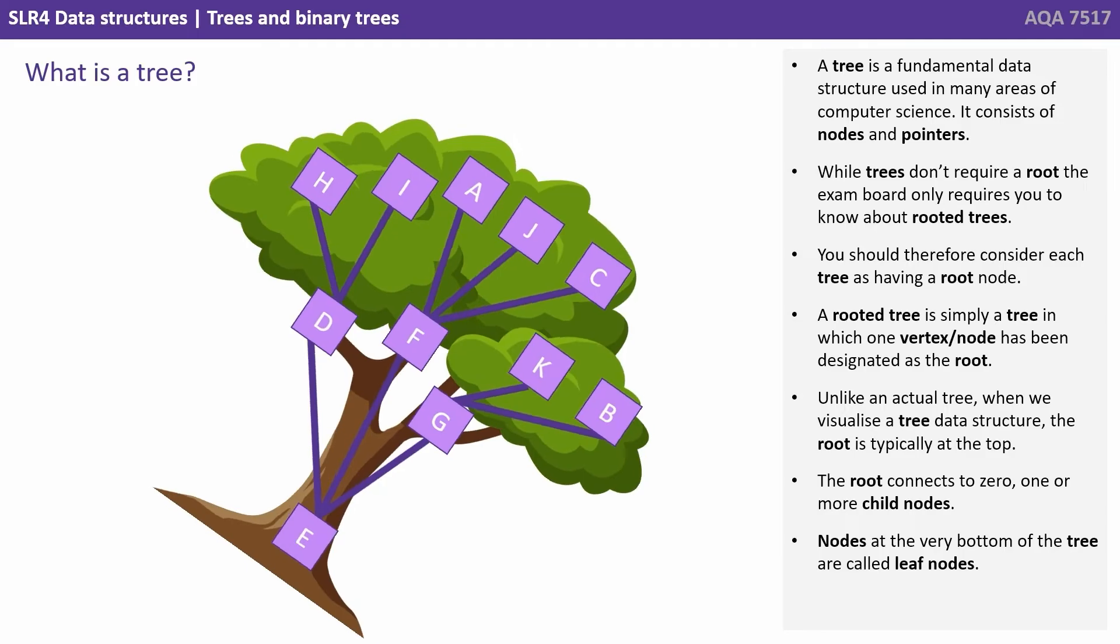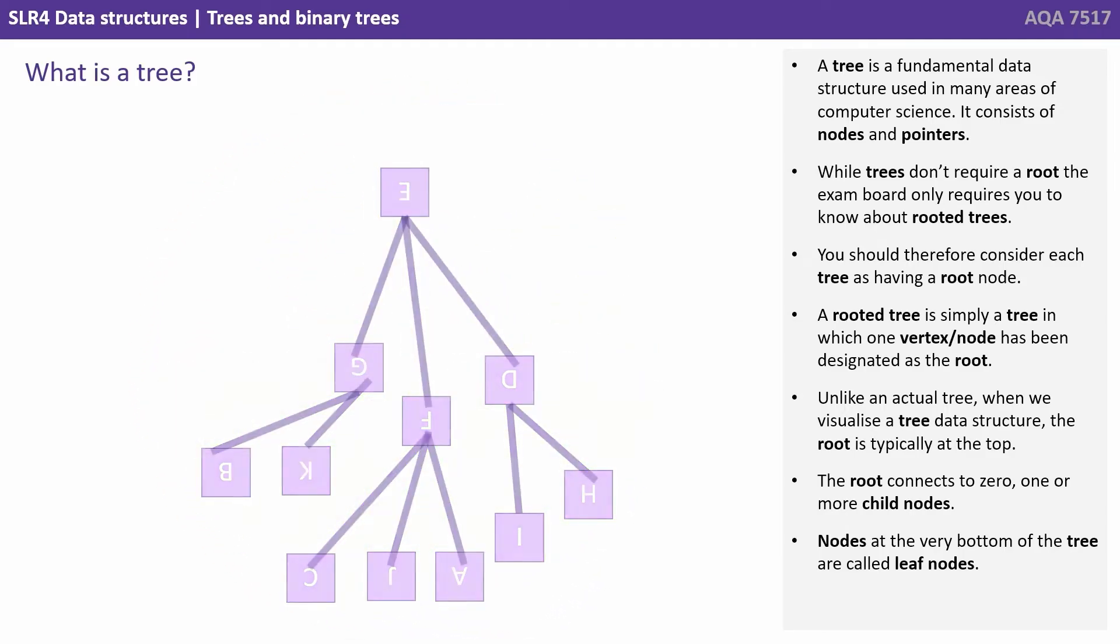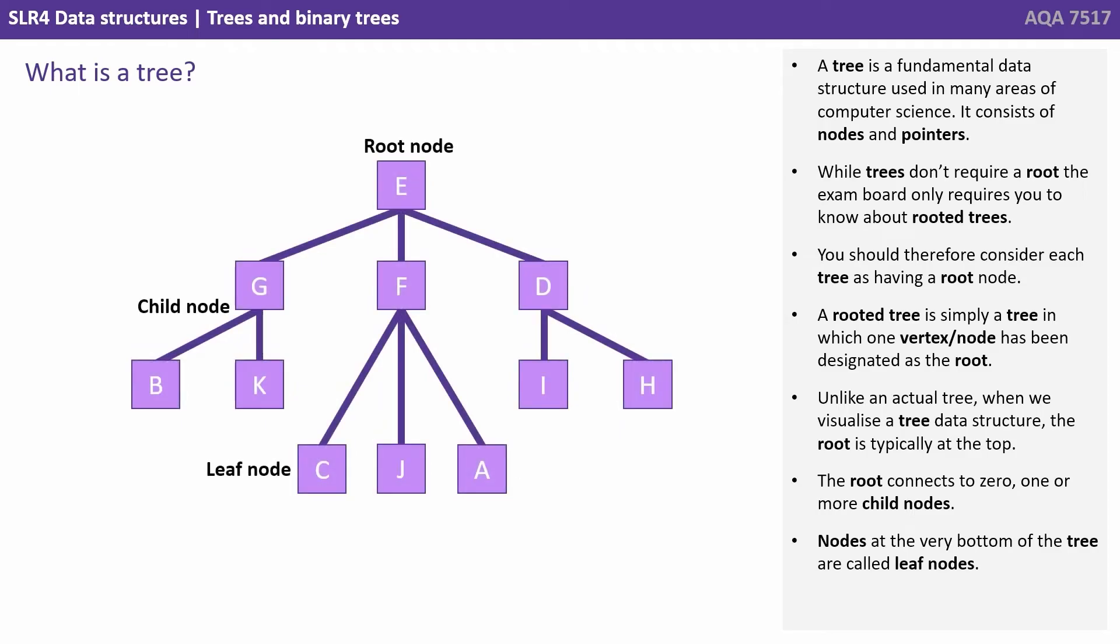Unlike an actual tree, when we visualize a tree data structure the root is typically at the top. The root connects to zero, one or more child nodes.